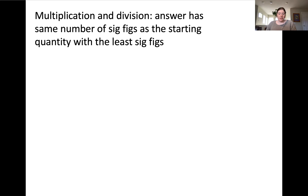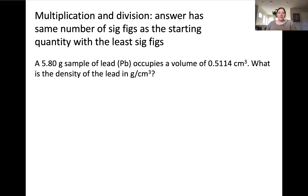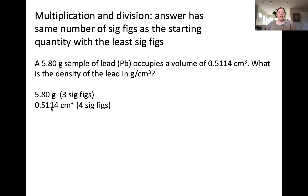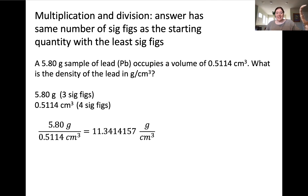The answer you get for your calculation will have the same number of significant figures as the starting quantity with the least number of significant figures, in the case of multiplication and division. For example, if you have a 5.80 gram sample of lead that occupies a volume of 0.5114 centimeters cubed, we can calculate the density of lead in grams per centimeter cubed by considering the number of significant figures in both of these measured quantities. The mass, 5.80, contains three significant figures. The volume, 0.5114 centimeters cubed, contains four significant figures.